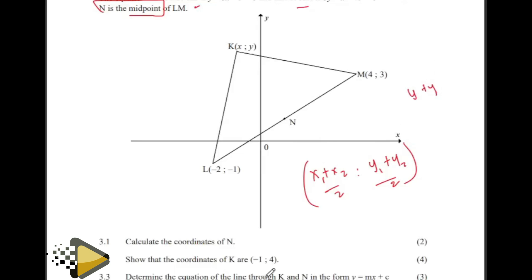They ask you to show that K is negative 1 and 4. This is K, a point where two lines are meeting. Remember they gave us the equation of KL and the equation of KM. At the point where two lines are meeting, those lines will be equal to each other. Get the equation of KM and equate it to the equation of KL. In other words, solve these equations simultaneously.